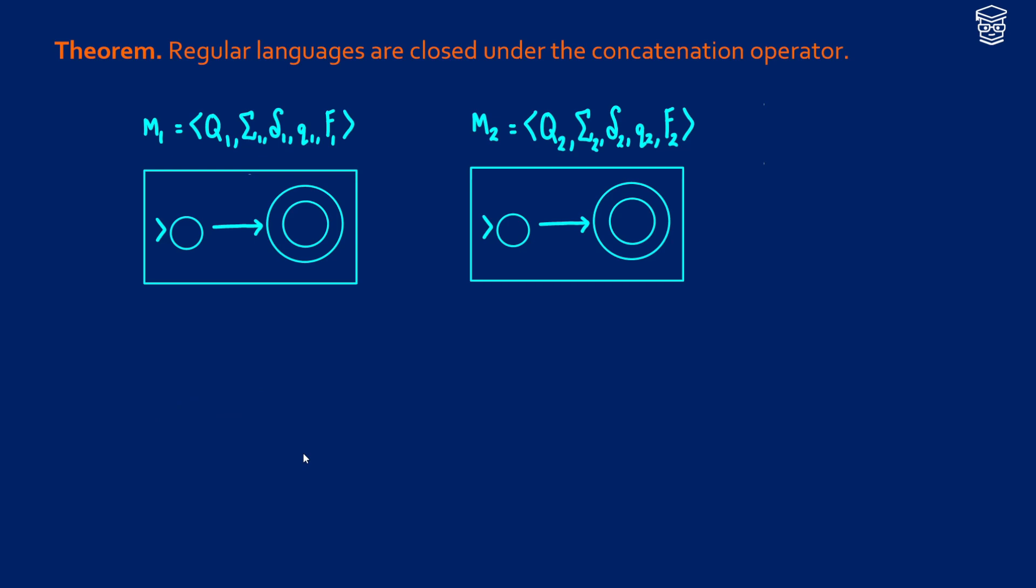So here's the proof idea. What we're going to do is we're going to take these two machines and we're going to concatenate them. That means that we do the first one and then we do the second one. So we should only get acceptance if it goes through the entire machine.